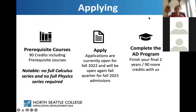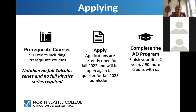Regarding applying for the degree: if you already have your associate's degree or 90-plus college credits, you're in a good place to potentially apply. It will come down to whether you've completed your technical prerequisites. I'm happy to set up a Zoom session to go through your previous transcripts — what will transfer, what you still need, and whether you're eligible to start this fall or need to wait until fall 2023. Applications are currently open for fall 2022 and will open again each quarter for the following fall.